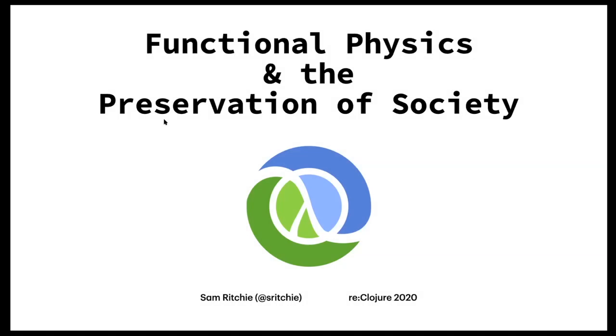My name is Sam Ritchie. I've modified the title of my talk a bit to make it more extreme sounding. So we're going to talk about Clojure, functional programming in physics, and the preservation of society. I think society is in a fine place, but we're at the beginning of everything and our methods of communication of ideas are not what they're going to be in 500 years. This talk will be about one twitch of an attempt to start working on that problem.